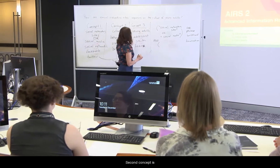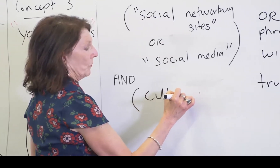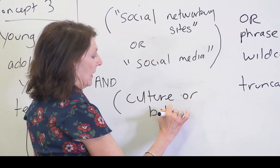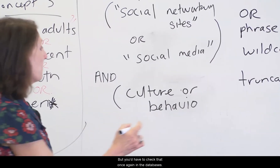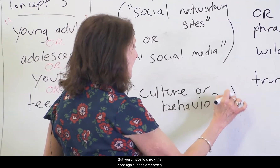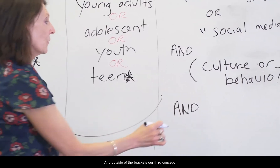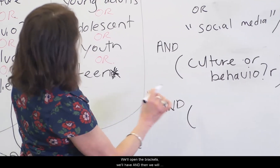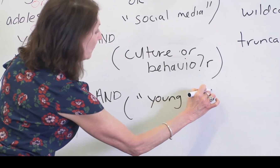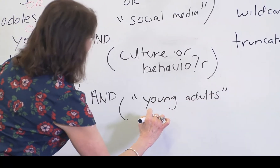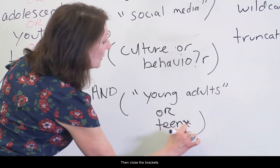The second concept is culture or behaviour. Most databases will allow you to use your search techniques within the brackets, but you'd have to check that in each database. Outside the brackets, our third concept: we'll open the brackets, use AND, and we'll have 'young adults' or 'teen,' then close the brackets.